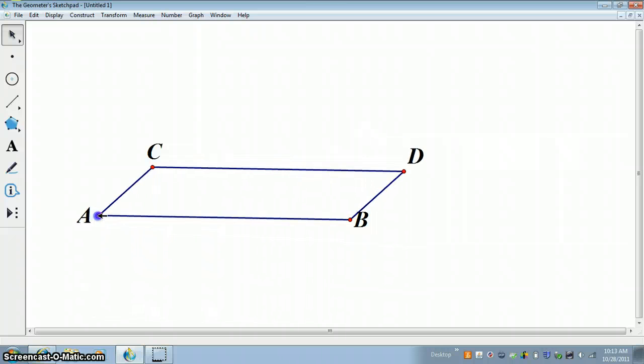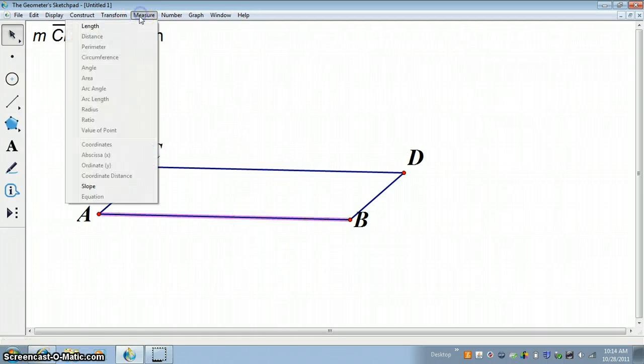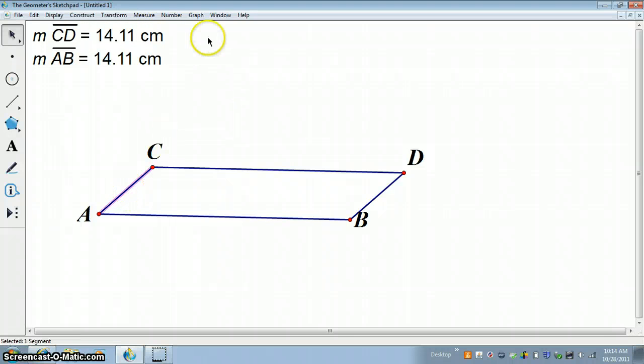So let's take a look at some properties of parallelograms. Let's measure the length of this segment and the length of segment AB. So those segments are congruent.